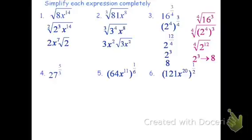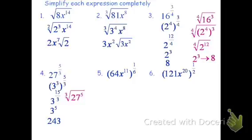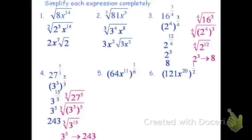For number 4 with 27 to the 5 thirds: 27 is 3 times 3 times 3, or 3 to the 3rd power. Multiplying 3 times 5 thirds, I get 3 to the 15 thirds, which reduces to 3 to the 5th. 3 multiplied together 5 times is 243. Using radicals, it's the 3rd root of 27 to the 5th; 27 becomes 3 to the 3rd, multiply the exponents to get 3 to the 15th inside a cube root, and 3 goes into 15 five times — still 243.